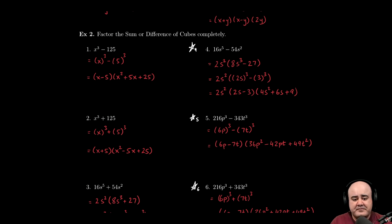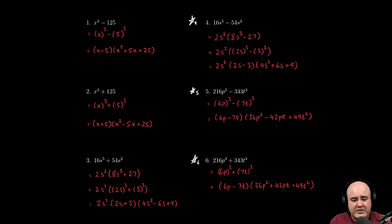That gives us that. Last one in this list is 16s to the fifth plus 54s squared. Now consider just the numbers first, 16 and 54. A number that goes into, the largest number that goes into both of these, is actually just 2, so you can factor a 2 out.